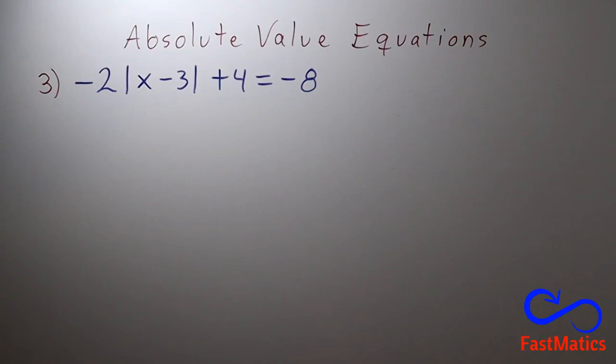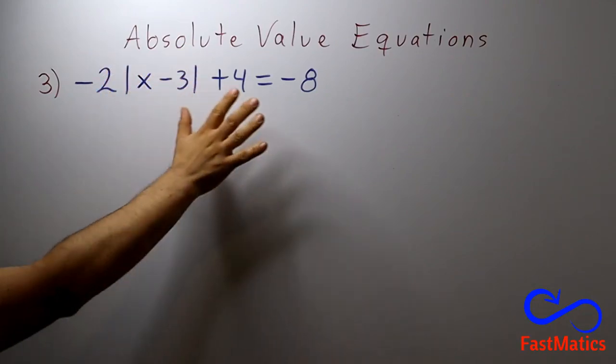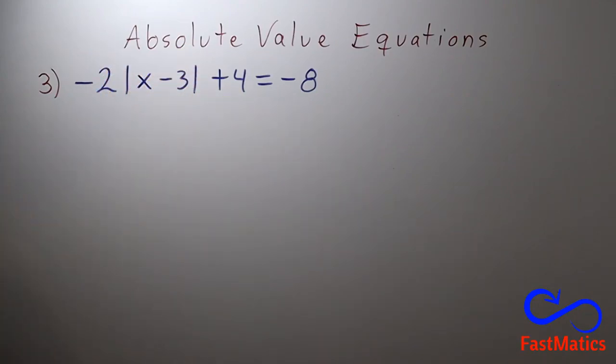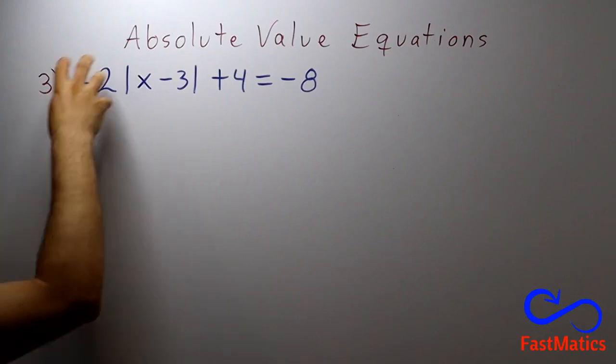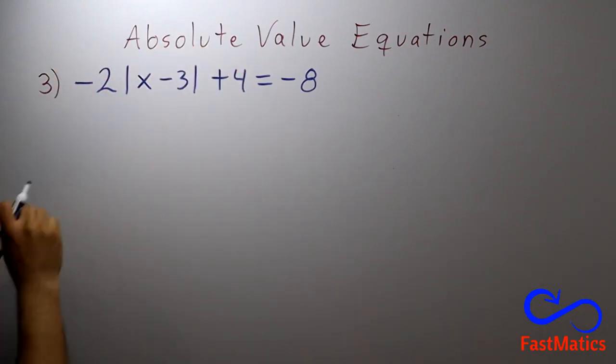First of all, we see that we have an absolute value equation, so we are going to isolate on the left side the absolute value, and the other elements will pass to the right side.